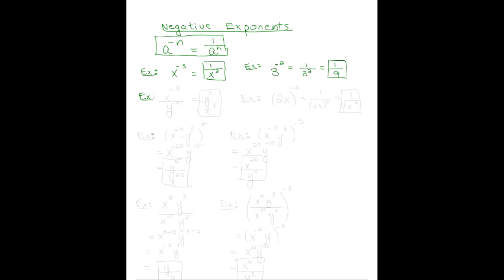If we have a negative exponent in the numerator and in the denominator, all we do is drop the negative on the numerator and bring it to the denominator, and we drop the negative on the denominator and bring it to the numerator. So we take the reciprocal of both.